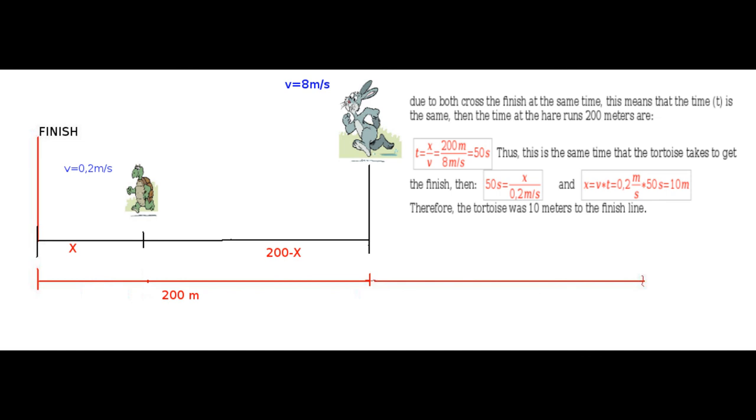And this is the same time that the tortoise takes to get to the finish. Then, 0.2 meters per second by 50 seconds equals 10 meters. This is the distance that the tortoise runs when the hare resumes the race.